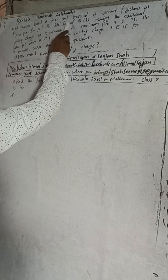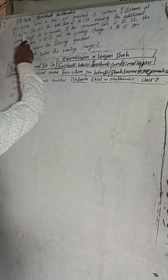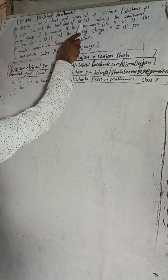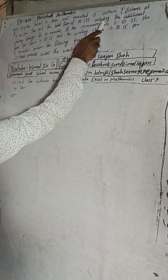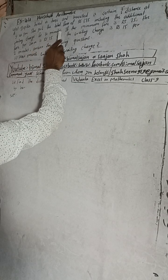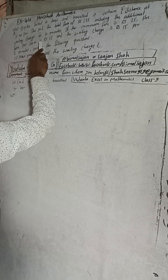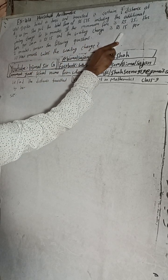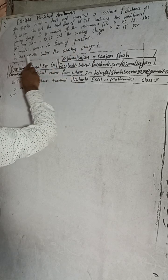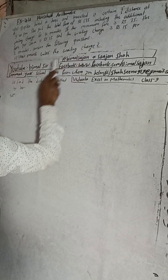Hi Class 9 and 10 students, welcome back to Bimbal Sarji YouTube channel. This is Question 4B, Exercise 4.4, Household Arithmetic, Vedanta Excel in Mathematics Class 9. The question is: Deepika hired a taxi and traveled a certain distance. At 9:40 PM she paid a total fare of Rs 675, including an additional waiting charge for 10 minutes. The minimum fare is Rs 75, the fare for 200 meters is Rs 15, and the waiting charge is Rs 15 for 2 minutes.